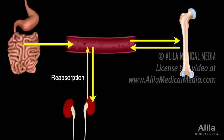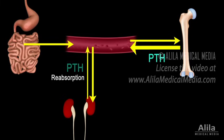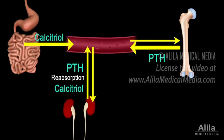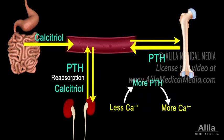When serum calcium level is low, PTH is upregulated. PTH acts to promote calcium release from bones and reduce calcium loss from urine. At the same time, it stimulates production of calcitriol, which promotes absorption of calcium in the small intestine while also increasing reabsorption in the kidney. Together, they bring calcium levels back to normal.